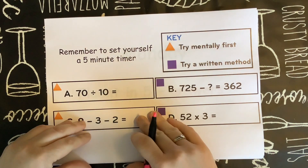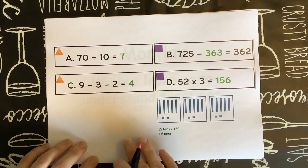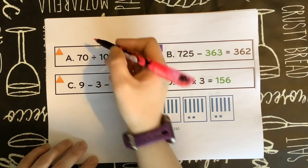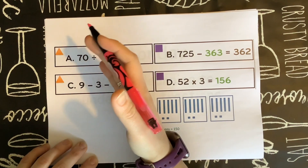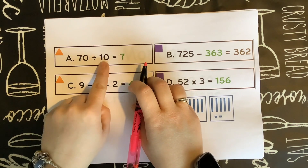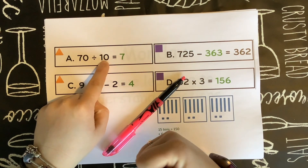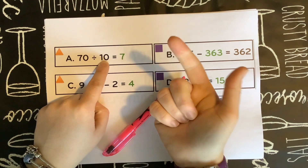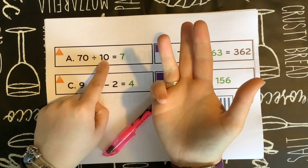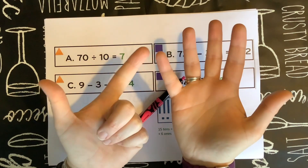Let's have a look at the answers. Here you've got 70 divided by 10 equals 7. Hopefully you either made yourself 10 groups and shared your 70 into your 10 groups, or you realised that you're going up in groups of 10, so you could count up in groups of 10: 10, 20, 30, 40, 50, 60, 70 — that gives you seven groups.